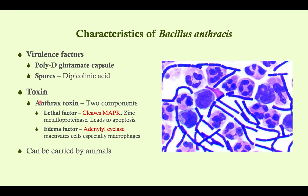The toxin is anthrax toxin, and there are two components that cause disease: lethal factor and edema factor, and both of them are operative in all of the anthrax diseases. Lethal factor cleaves MAP kinase, which is used in an intracellular signaling pathway — so when it interferes with MAP kinase, ultimately it leads to apoptosis. Edema factor is an adenylyl cyclase — it takes ATP, converts it to cyclic AMP, and cyclic AMP is really important for fluid permeability, so it will inactivate cells that way. In particular, it kills off macrophages, which are important to kill bacteria, so by doing that it helps the organism evade the immune system.